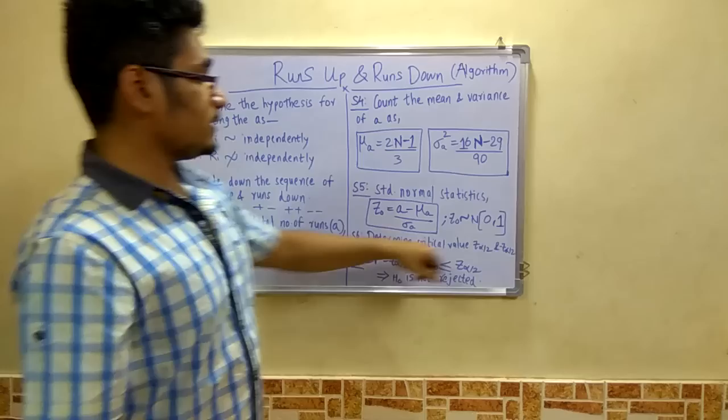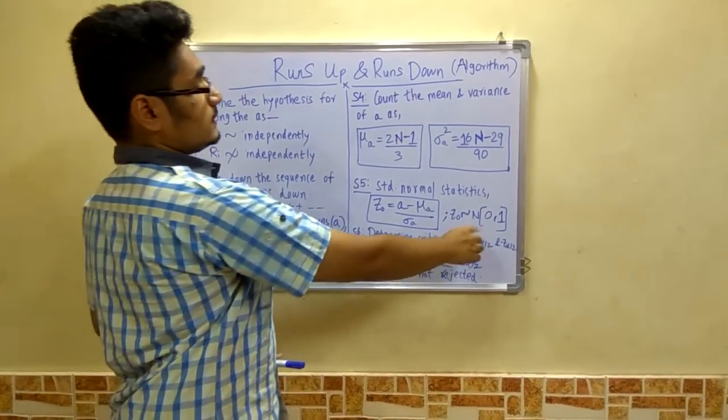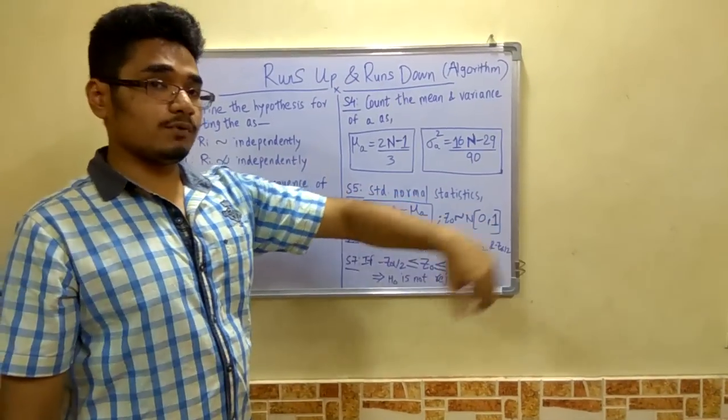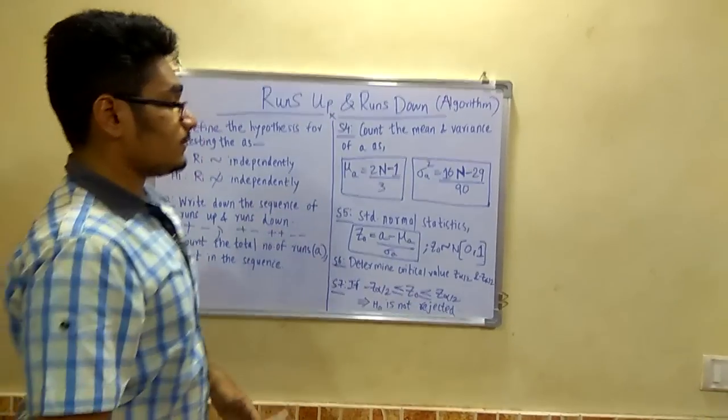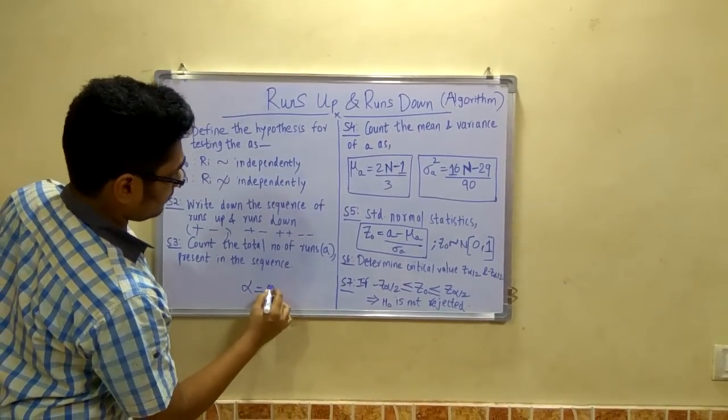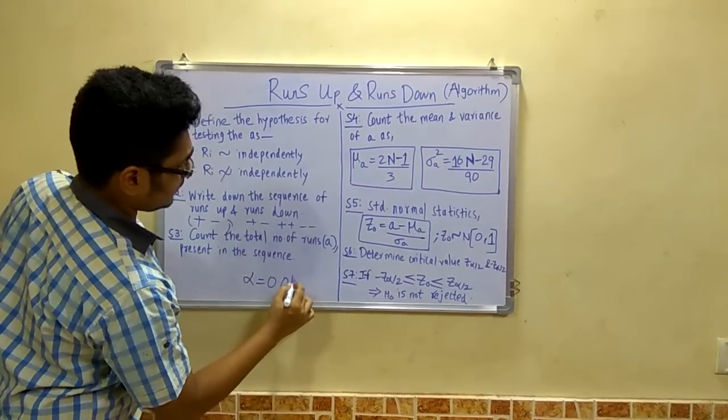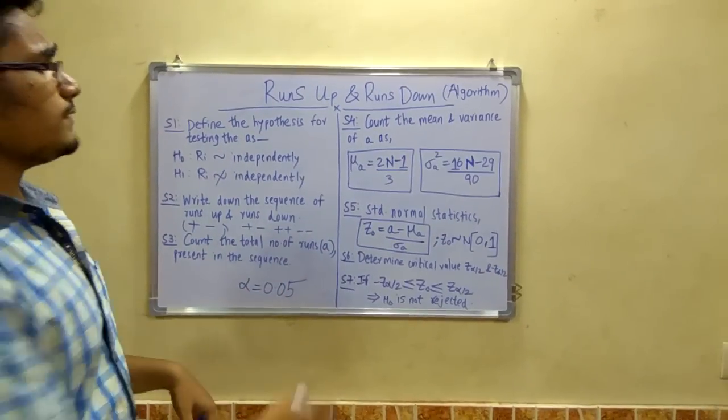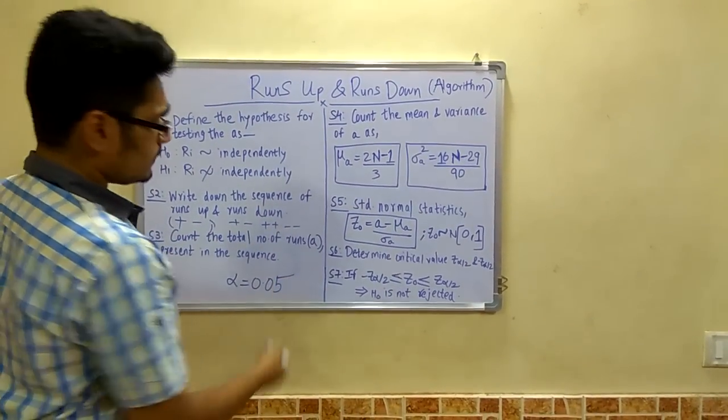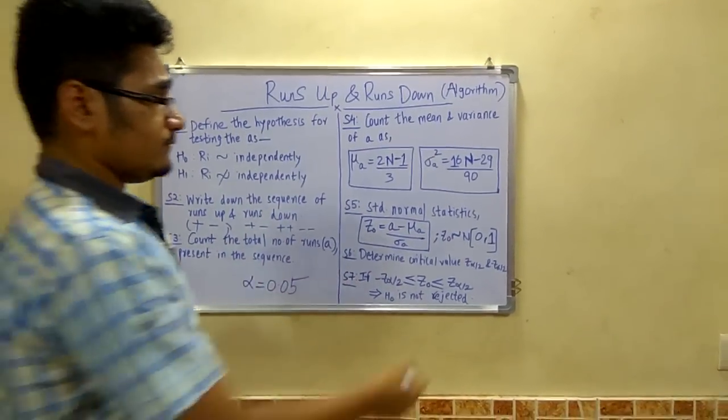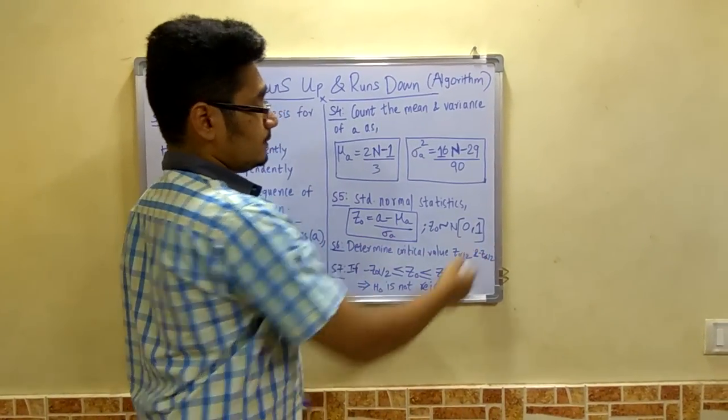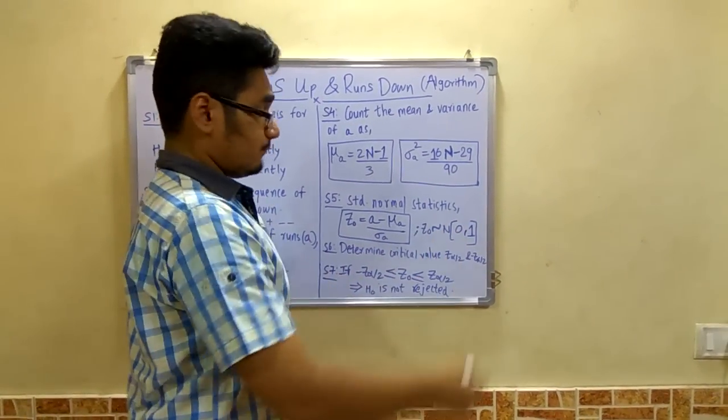After this you have to determine the critical value that is Z alpha by 2 and minus Z alpha by 2. Now this value of alpha could be anything, like as I have told in my previous problems, alpha can be 0.05. So you take the half of 0.05 that is 0.025. So you have to determine this value, that is the positive alpha by 2 and negative alpha by 2.